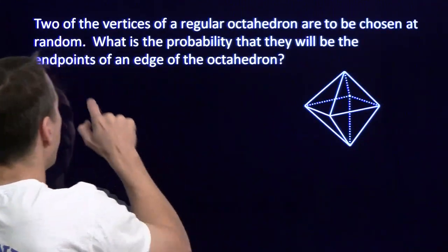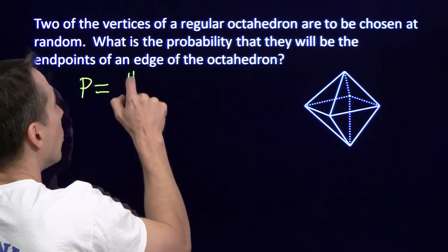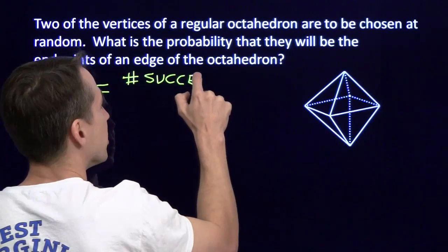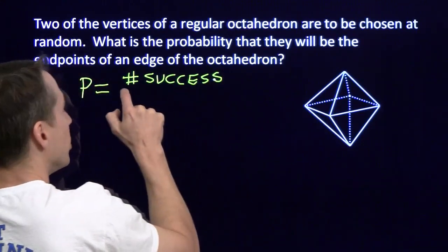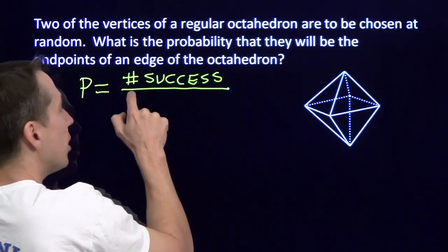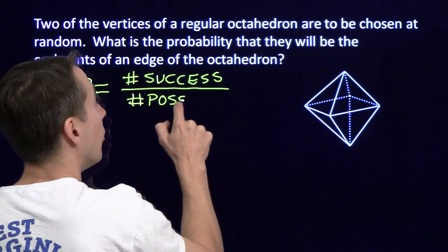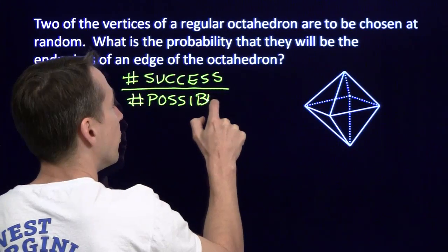Now we're going to start off the way we typically do with a probability problem. We're going to first count the number of successes, the number of ways we can choose two of these vertices such that they're the endpoints of one of the edges, and then we're going to divide by the number of possible outcomes, the number of ways we can choose two of the vertices.